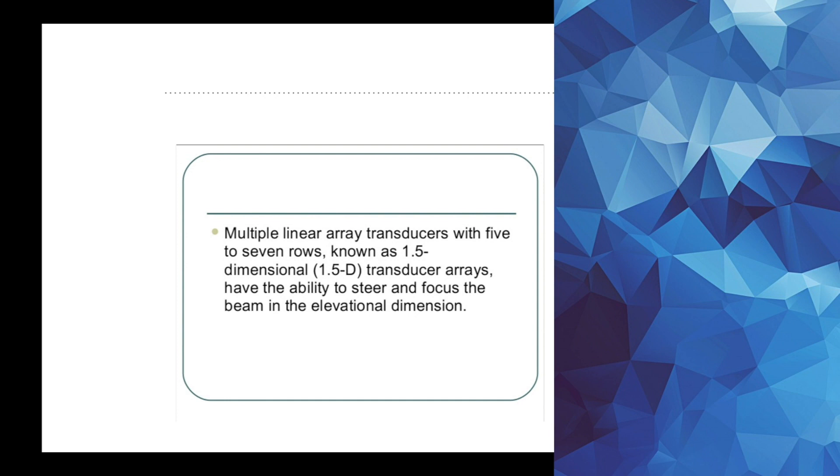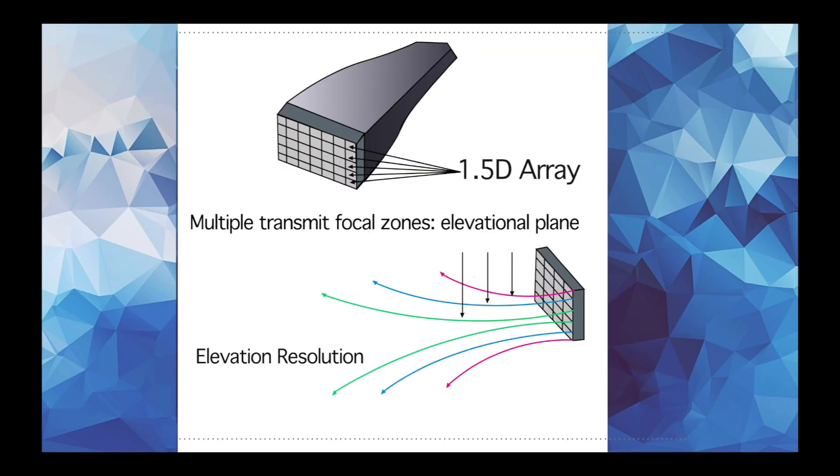So just specifically, if you can cement in your mind 1.5D with elevation thickness, that's pretty much what you're going to need to know. And let me show you what that means. So 1.5D will have not only columns of crystals, but it'll also have the rows of crystals, and typically there's going to be five to seven rows of crystals.